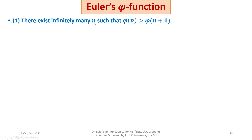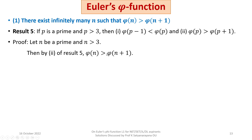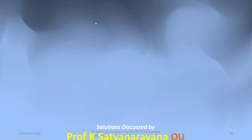For Result 1 (there exist infinitely many n such that phi(n) > phi(n+1)): let n be a prime greater than 3. From the second part of Result 5, phi(n) > phi(n + 1). Since there are infinitely many primes greater than 3, phi(n) > phi(n + 1) for infinitely many n. Hence the result. These are the two results we wanted to prove, and we have established both.